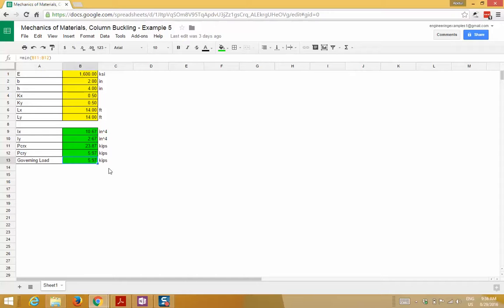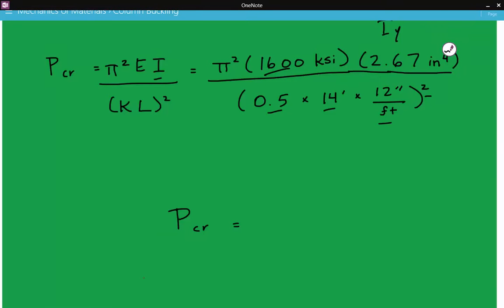In the spreadsheet, I calculated the critical buckling load about the x axis and y axis separately. But in the calculation, I went directly to the result because the effective length is equal for both axes. So all we have to do is use the smallest moment of inertia. The critical buckling load is 5.97 kips.